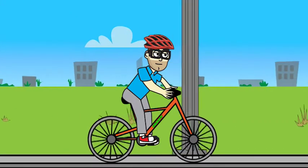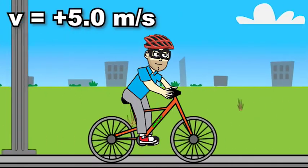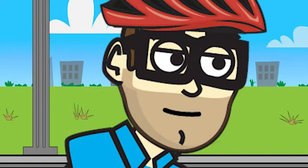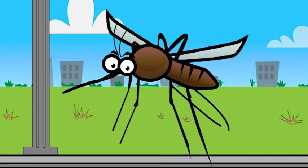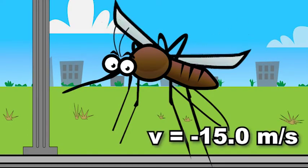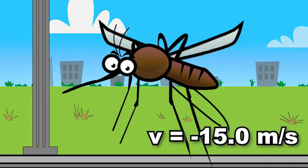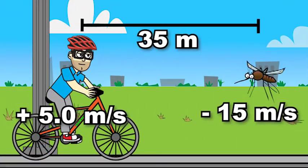It's a beautiful day, you're out on your bicycle riding at your favorite velocity of 5 meters per second when all of a sudden, what's that 35 meters ahead of me? It's a mosquito, and that mosquito is also moving towards me at a velocity of negative 15 meters per second.